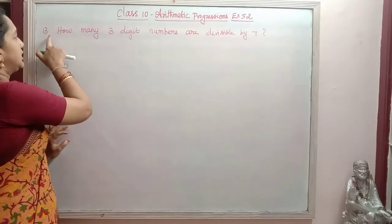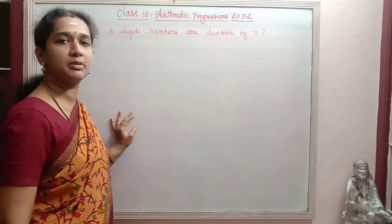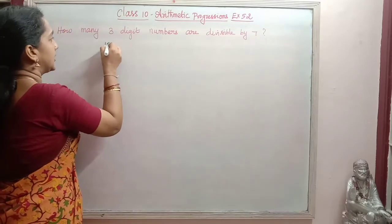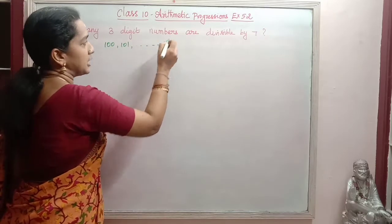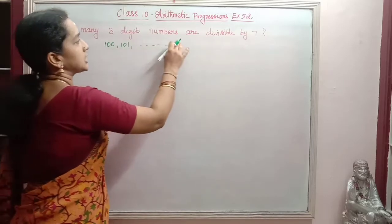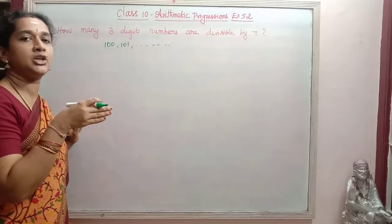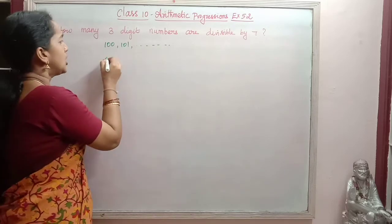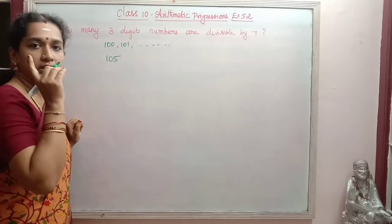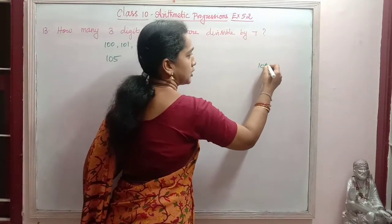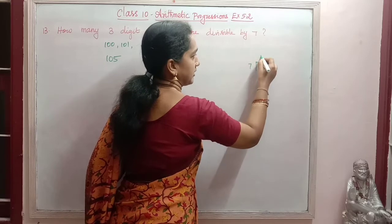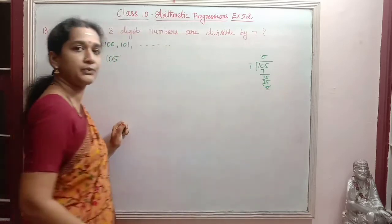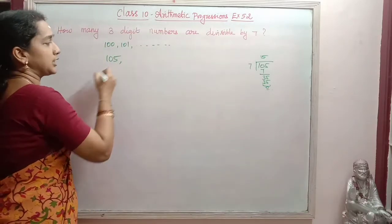Next, the 13th sum: how many 3-digit numbers are divisible by 7? We know that 3-digit numbers start from 100. We need to find the first 3-digit number that is divisible by 7. That is 105, since 7 × 15 = 105. So the first number is 105.